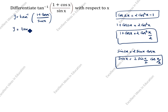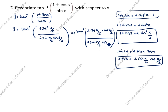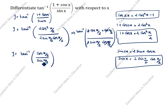Now we write y equal to tan inverse of 2 cos square(x/2) divided by 2 sin(x/2) cos(x/2). The 2 and the cos(x/2) cancel, leaving tan inverse of cos(x/2) divided by sin(x/2). We already know from trigonometry that cos theta divided by sin theta equals cot theta.